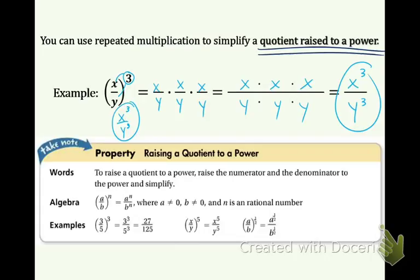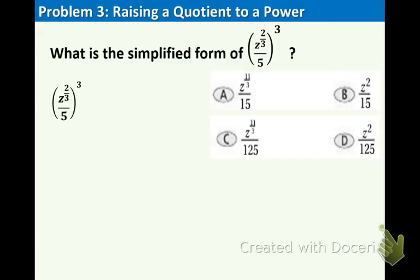Take a look at a couple examples right below. We have 3 fifths to the 3rd. Share the 3 with each. And simplify. So we get 27 over 125. The middle one is just like the one we did. So I'll skip that one. And the very last one, a over b raised to the 1 half, simplifies to a to the 1 half over b to the 1 half. So again, we're just sharing that exponent with everything inside.